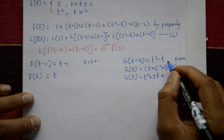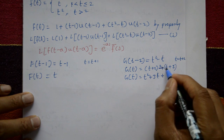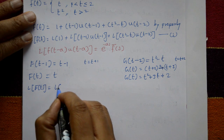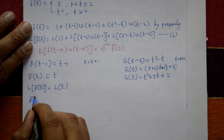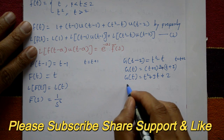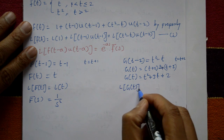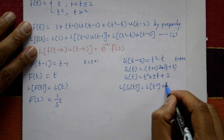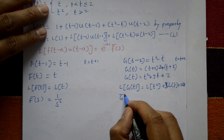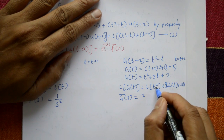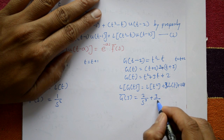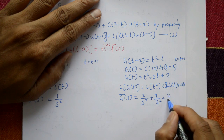So g(t) = t² + 3t + 2. Applying Laplace: F̄(s) = 1/s². For ḡ(s): L{t²} = 2/s³, L{3t} = 3/s², and L{2} = 2/s. Therefore ḡ(s) = 2/s³ + 3/s² + 2/s.